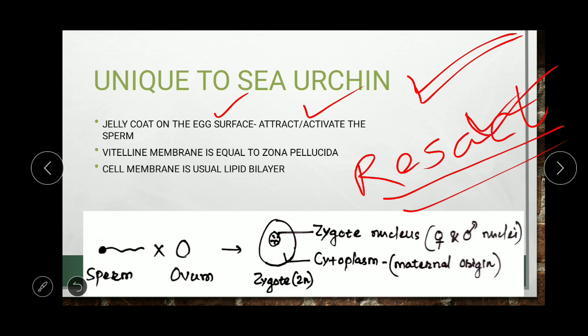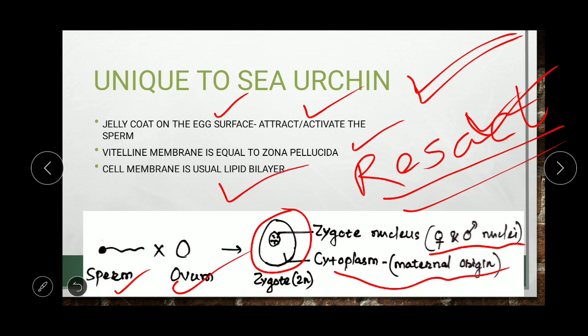So resact protein is associated with increase in mitochondrial respiratory activity of the sperm. The vitelline membrane is equivalent to the zona pellucida and performs the same function. The cell membrane is the usual lipid bilayer. In the zygote, the nucleus is a fusion of male and female nuclei — diploid in nature — while the cytoplasm is maternal in origin.